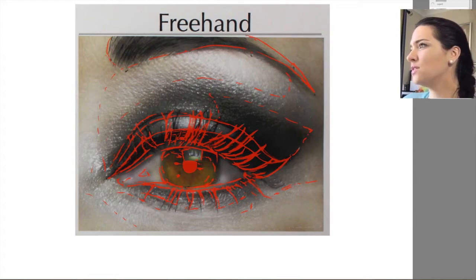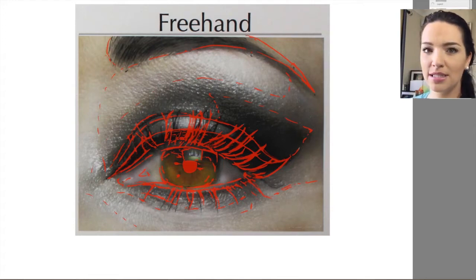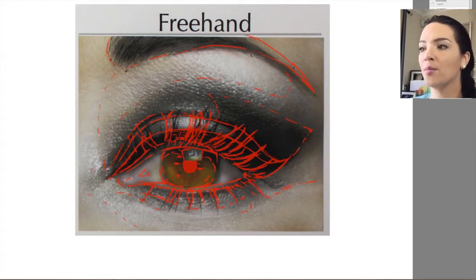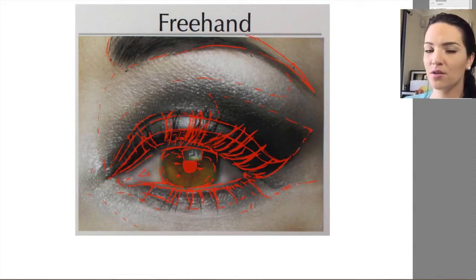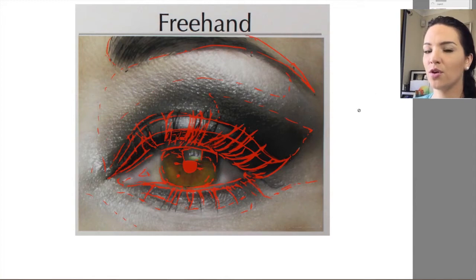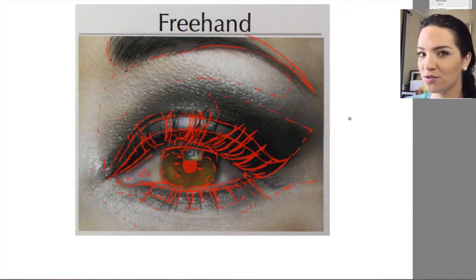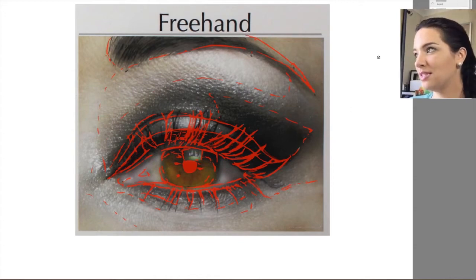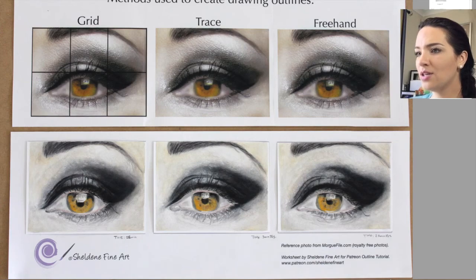So that was all three outlines done. I'm quite happy with them — everything is still going to turn out pretty good in the end because the outlines are really close. Each one will still look like the reference photo; it's just that each one will look more like the reference photo than the other. Now that I've colored all the eyes in, we're going to see how the outline has affected the final result.